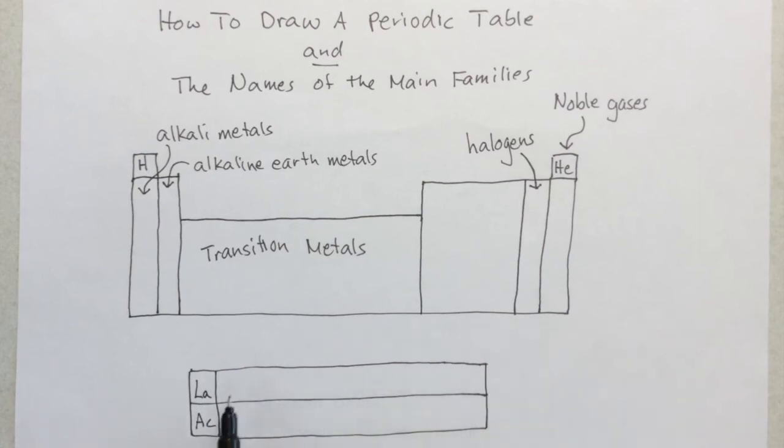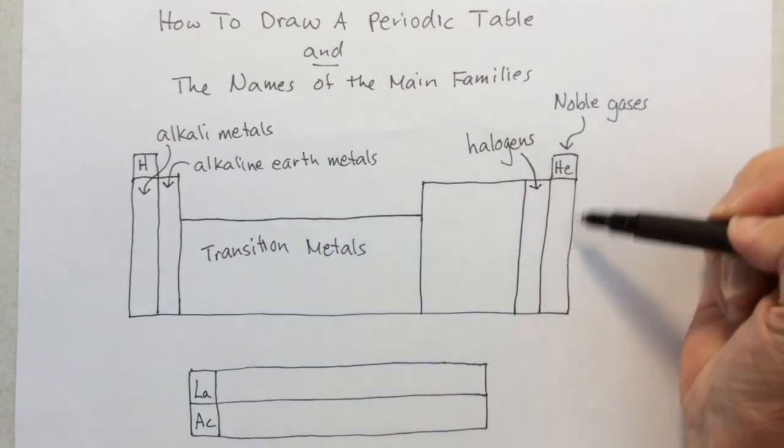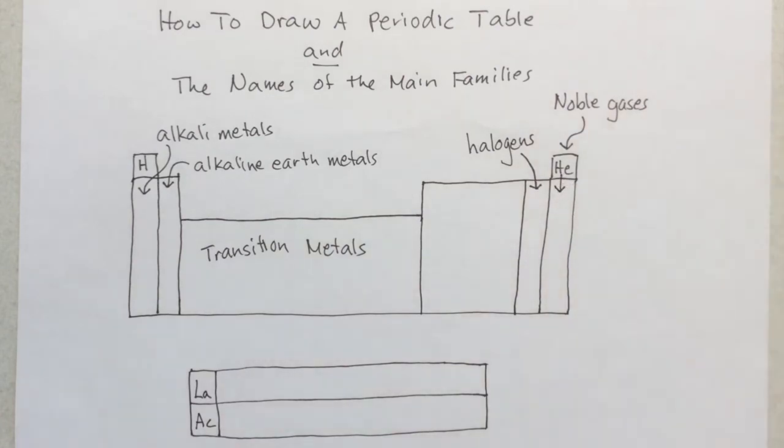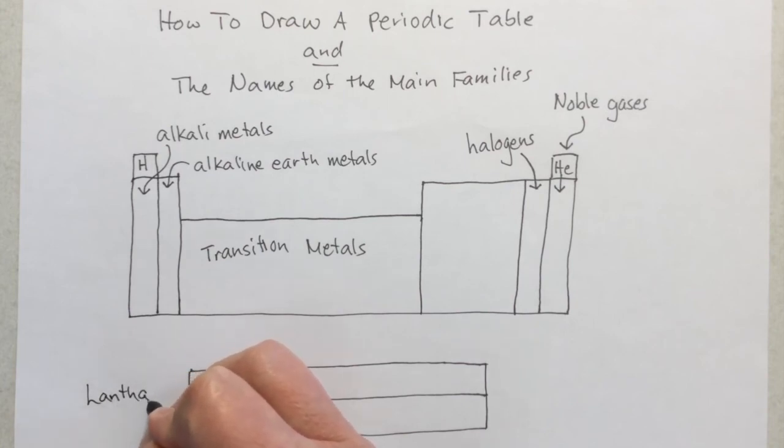Then down here, for these sort of neglected families down here, instead of going down, because the noble gases continue all the way down there, instead of going down, these go across. So lanthanum on over are called the lanthanides. Some books call them lanthanoids. And then from actinium on over, like uranium's in that group, are the actinides.